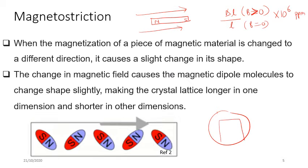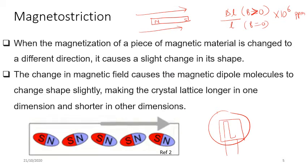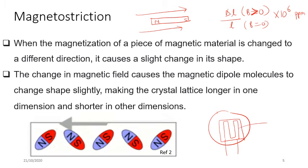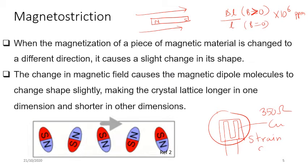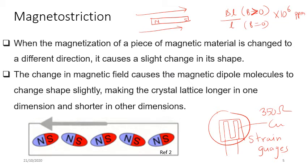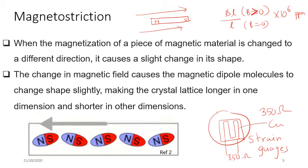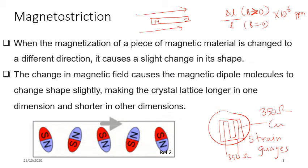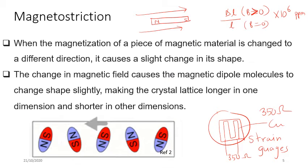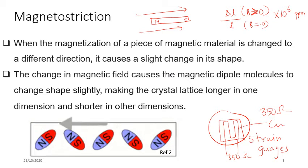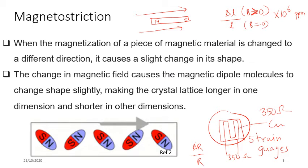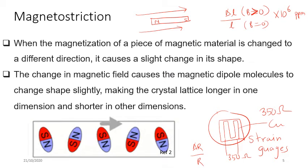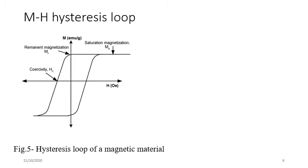To measure magnetostriction experimentally, a strain gauge is attached to the material sample. The strain gauge consists of thin copper wires with a resistance of 350 ohms. When the sample is placed in an external magnetic field, its dimensions change due to magnetostriction, which changes the dimensions of the strain gauge and thus its resistance. The change in resistance over original resistance gives the magnetostriction coefficient.